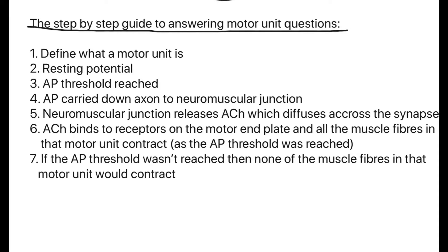So the first thing is to define what a motor unit is — a motor neuron plus all the muscle fibres it initiates. Then define what resting potential is, where the charge inside the neuron is smaller than outside the neuron. Then explain how the action potential threshold is reached — the charge inside the neuron is now greater than outside the neuron. The action potential is then carried down the axon to the neuromuscular junction. The neuromuscular junction then releases acetylcholine.